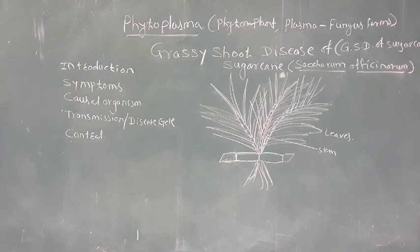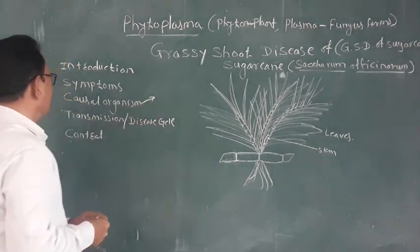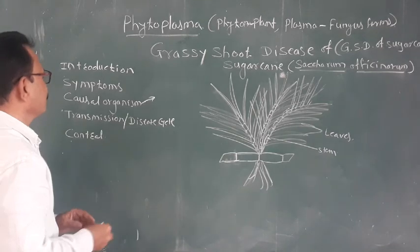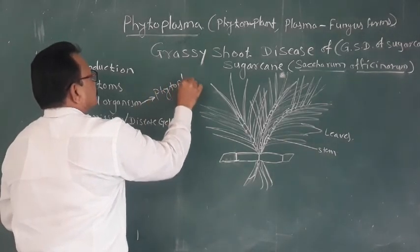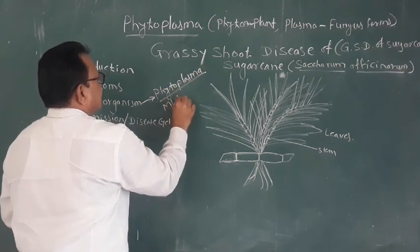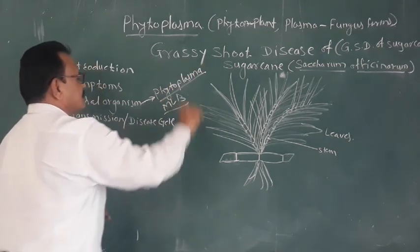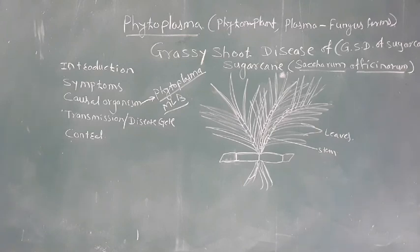The causal organism is the disease-causing organism. Here, the causal organism is phytoplasma. Phytoplasma was formerly known as MLB — that is, mycoplasma-like bodies — but recently it is also called phytoplasma.